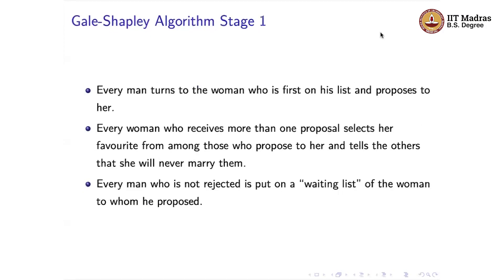Let's take a deeper look at the Gale-Shapley algorithm. It is a recipe involving several stages. In the first stage, every man turns to the woman who is first on his list and proposes to her. Every woman who receives more than one proposal selects her favorite from among those who proposed to her and tells the others she will never marry them — she rejects them. Every man who is not rejected is put on a waiting list of the woman to whom he proposed.